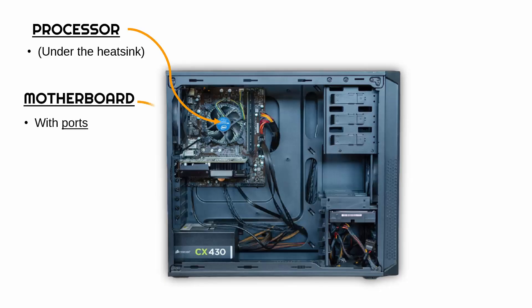The motherboard is this big rectangle — it looks quite brown in this photo. This one's a very small one; there's a lot more space in this case for a bigger motherboard. The motherboard will have some ports, which will be on the side poking out of the case. Also attached to the motherboard we've got memory, specifically RAM. There'll also be ROM and cache, but you can't see those as easily.